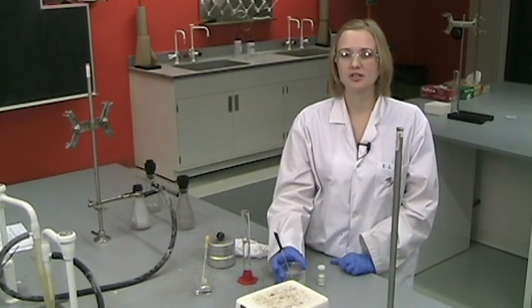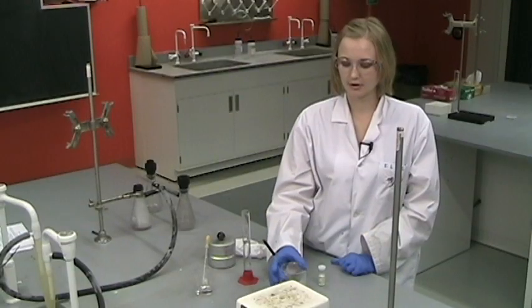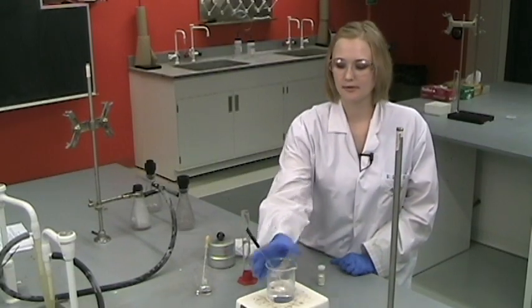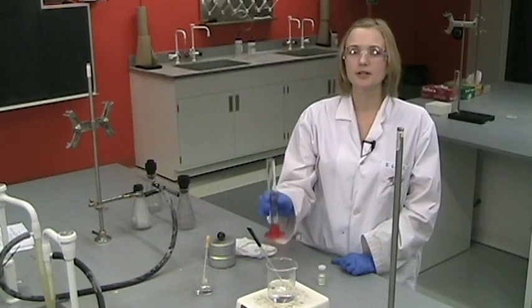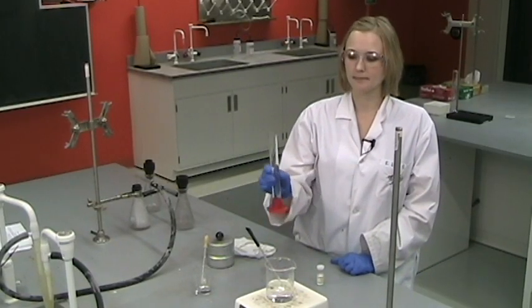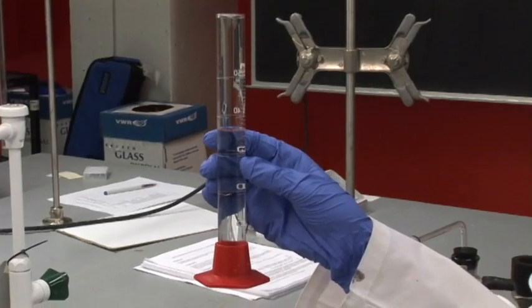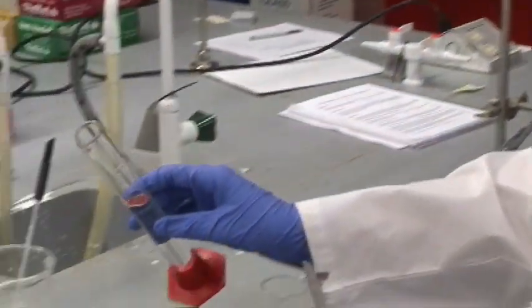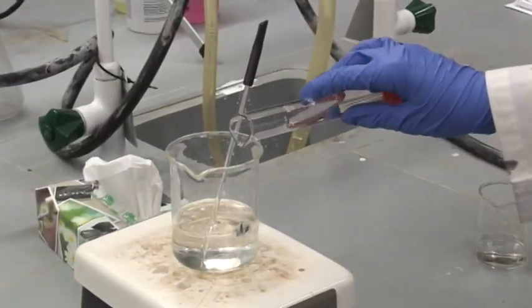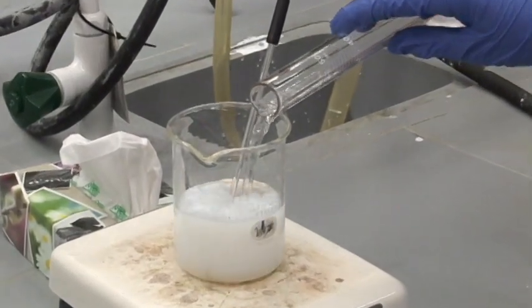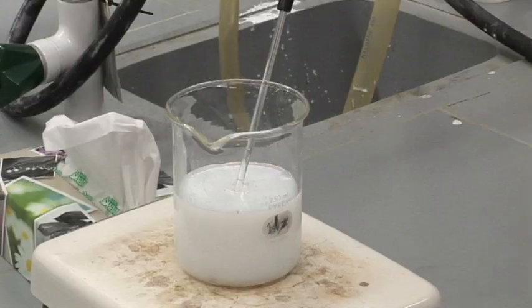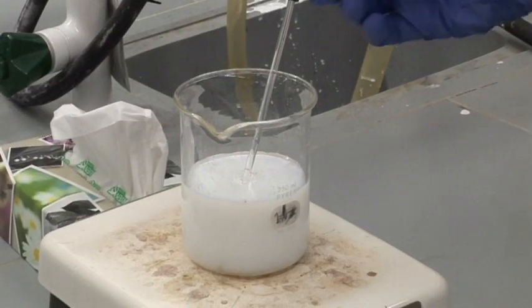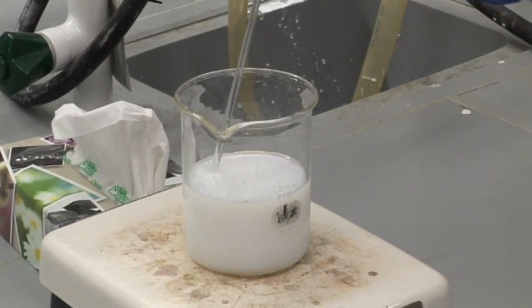Based on how much salt that you measured, you will be determining how much 0.1 molar silver nitrate you need to add to precipitate out all the chloride. So you'll measure that out using a graduated cylinder and then add it to your dissolved salt and you'll see this white precipitate form. This is your silver chloride, which is very minimally soluble in water.